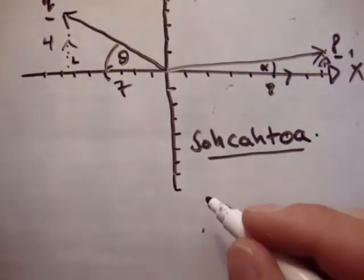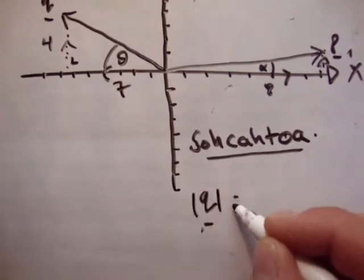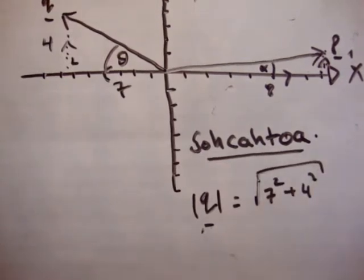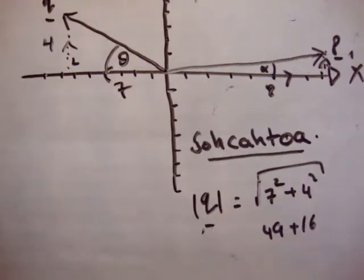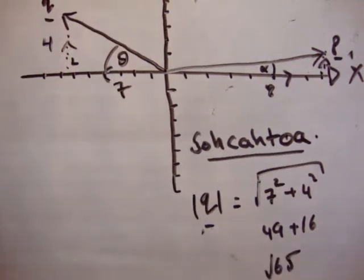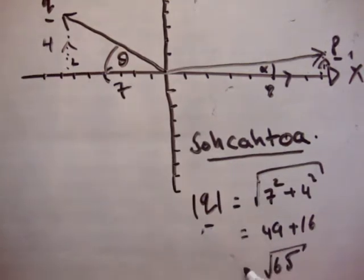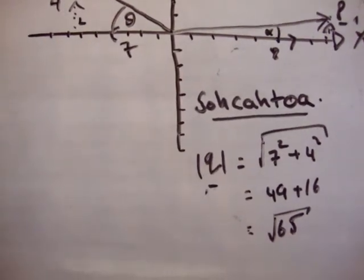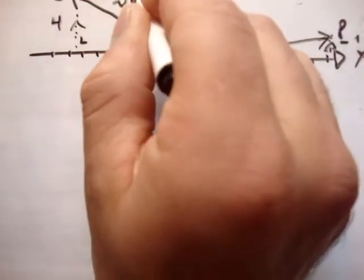So the magnitude of vector Q is equal to the square root of 7 squared plus 4 squared — that's 49 plus 16 — which equals the square root of 65. Getting the calculator, we get an answer of 8.06. I'm actually going to leave it as root 65, because when dealing with these things, decimals are always a bad thing to use. So the magnitude of vector Q is root 65 units in length.